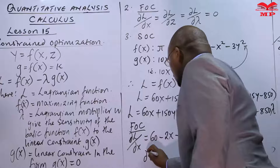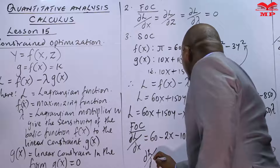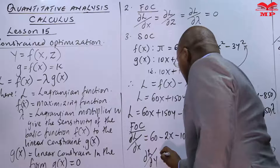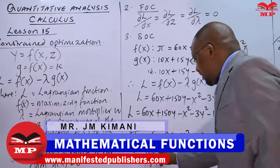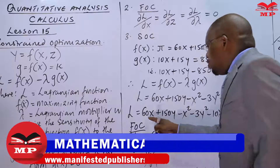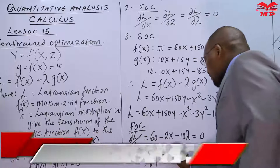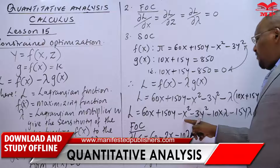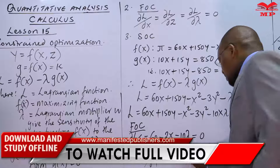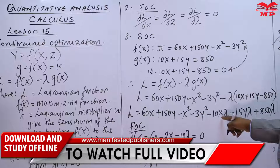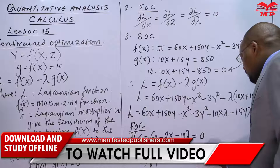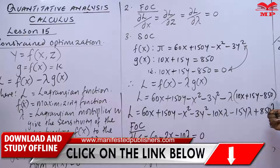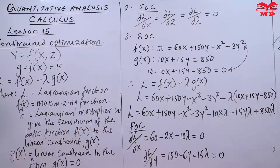Next, the partial derivative with respect to y: ∂L/∂y = 150 − 6y − 15λ = 0.